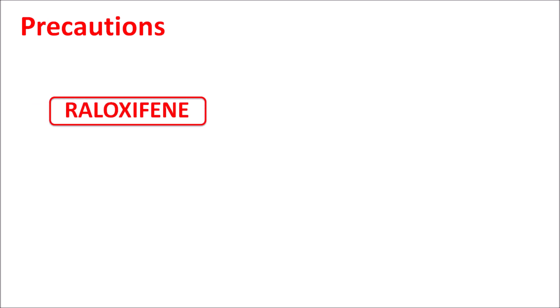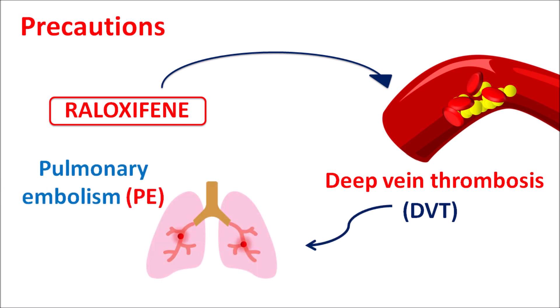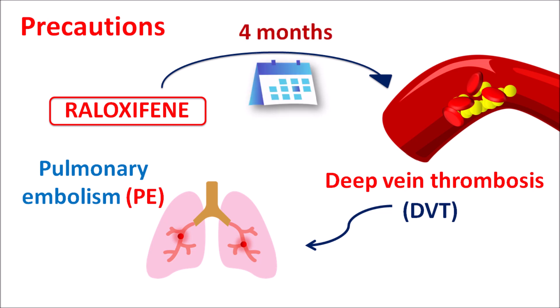Now let us look at the precautions of this drug. One of the important precautions of Raloxifene is that this drug can increase the risk of deep vein thrombosis, also called DVT. It is one of the important limitations of Raloxifene which should be carefully monitored, because this DVT may lead to pulmonary embolism. So in patients with any risk of thrombosis and pulmonary embolism, this drug should be carefully given. Particularly, this effect can be observed after 4 months of treatment.